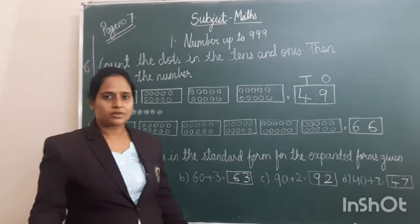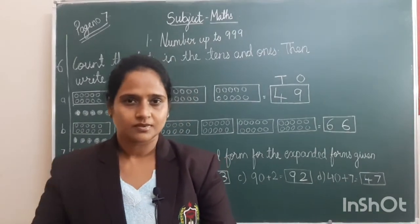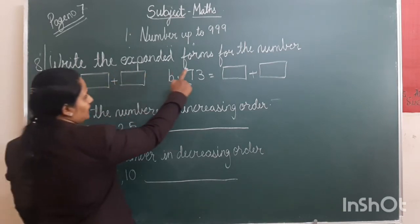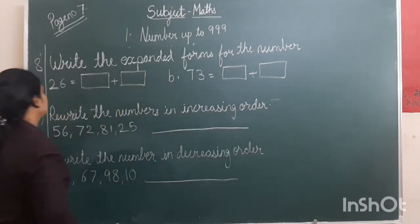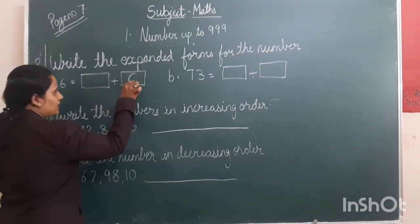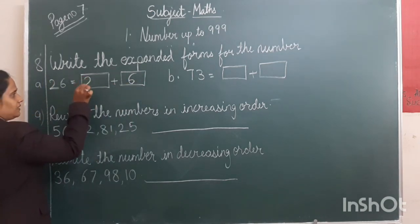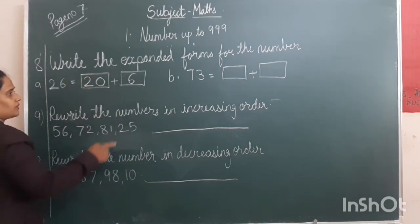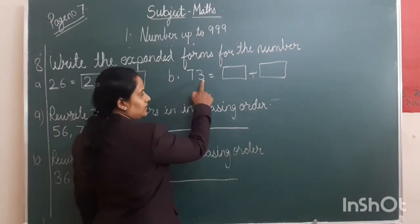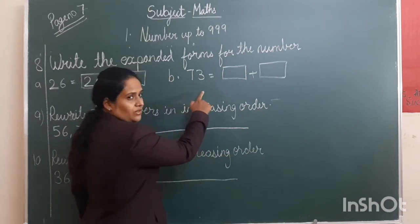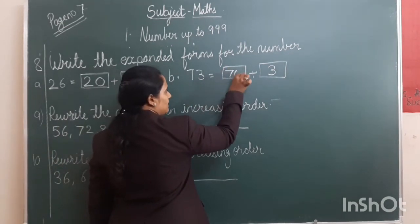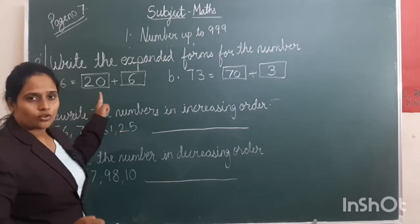Now question number 8: write the expanded form of the number. For 26 — at 1s place there is 6, and the value of 2 is 20. So the expanded form of 26 is 20 plus 6. Again, 73 — at 1s place we have 3, and the value of 7 is 70. Rest you have to do yourself.